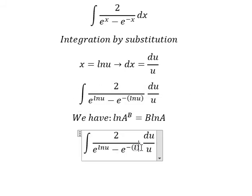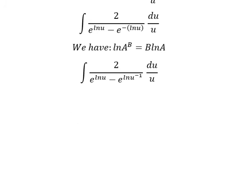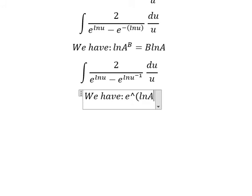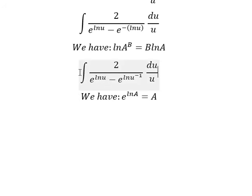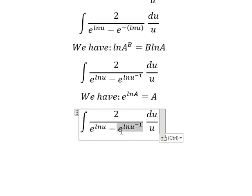We have ln of u to the power of negative one. Now we have the second formula: e to the power of ln(a) equals a. We need to use this formula for these two terms.